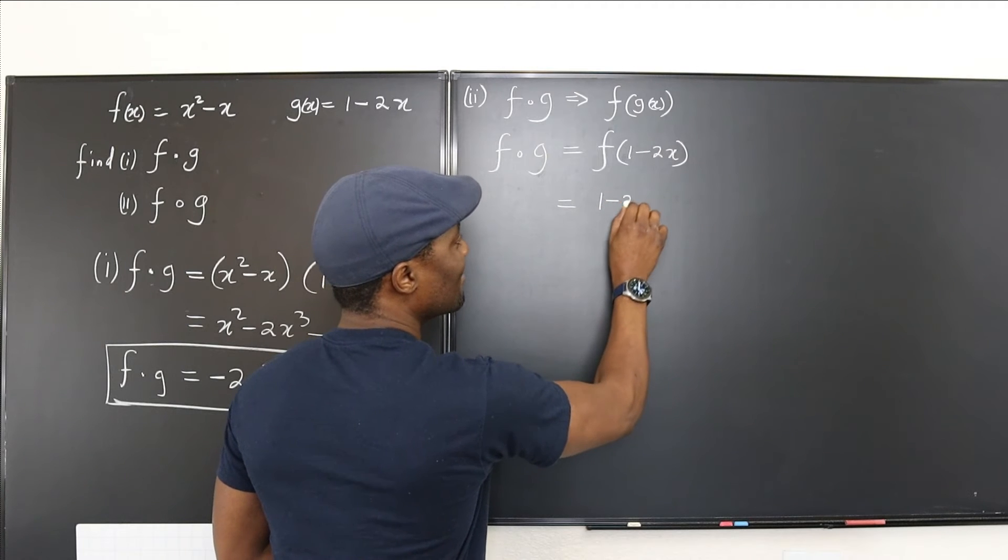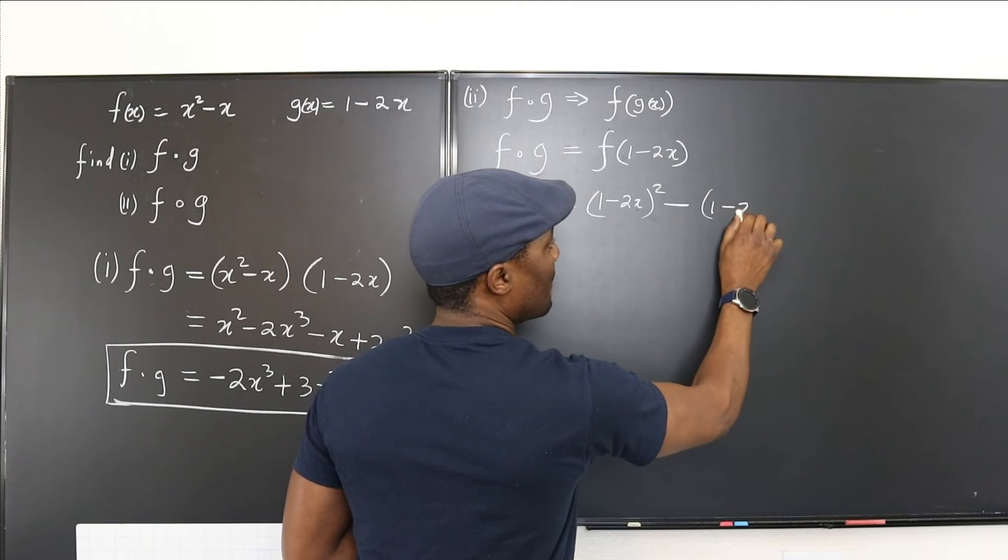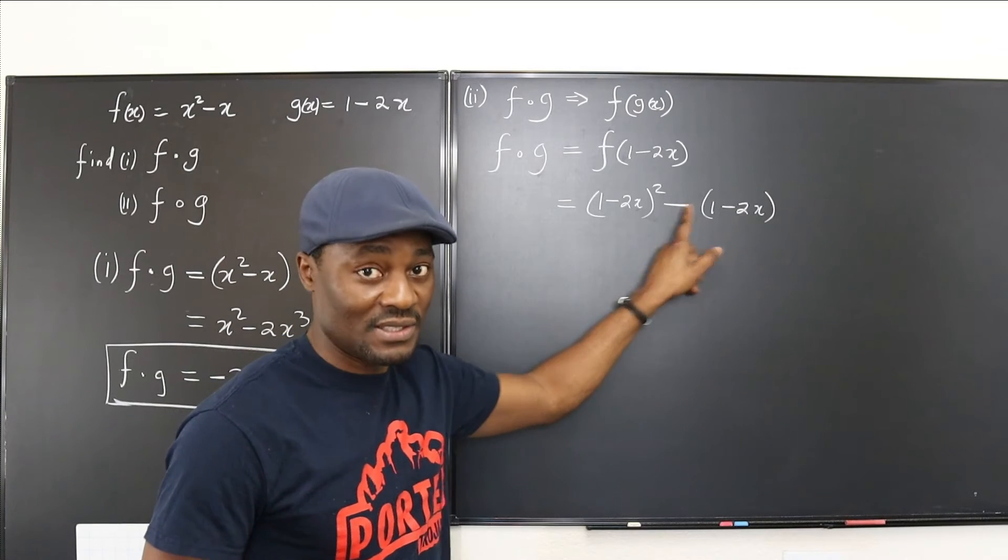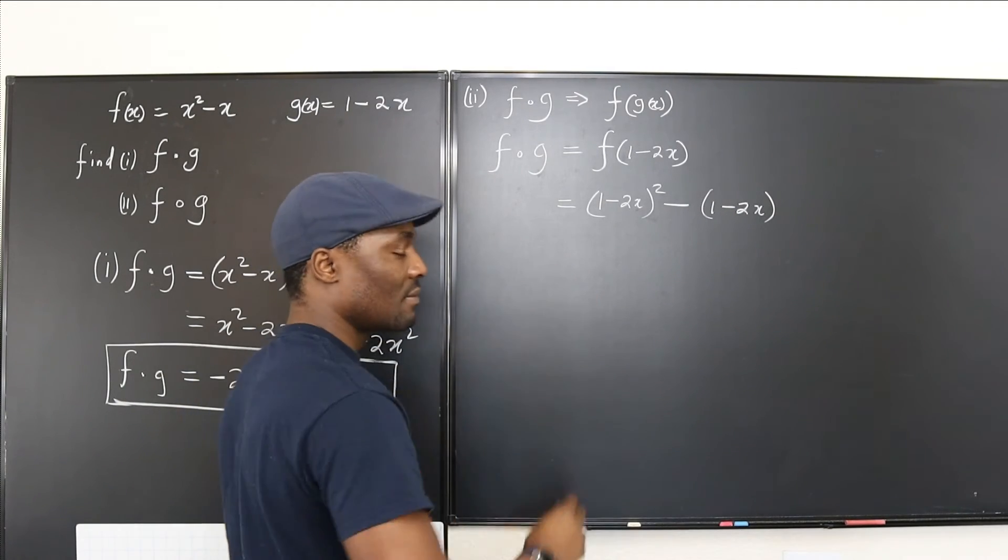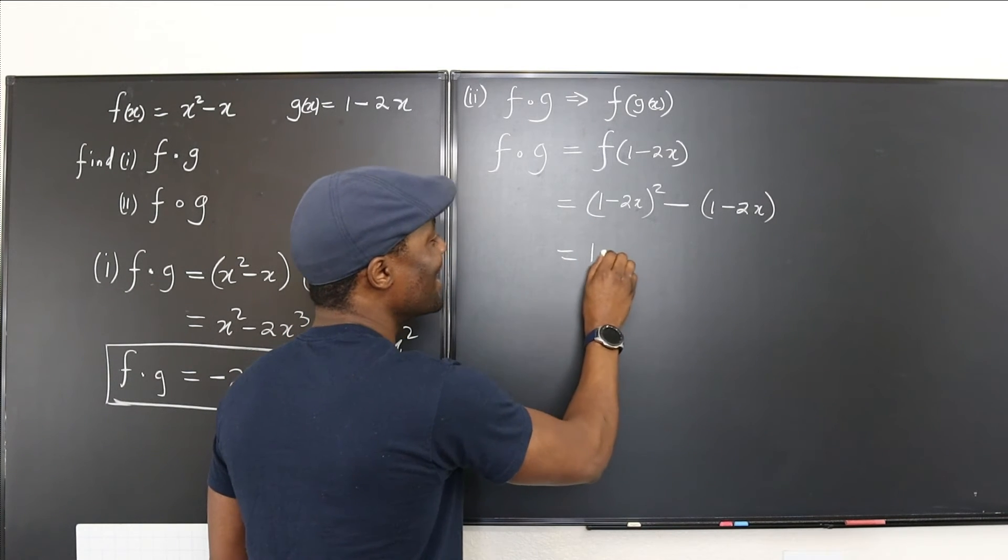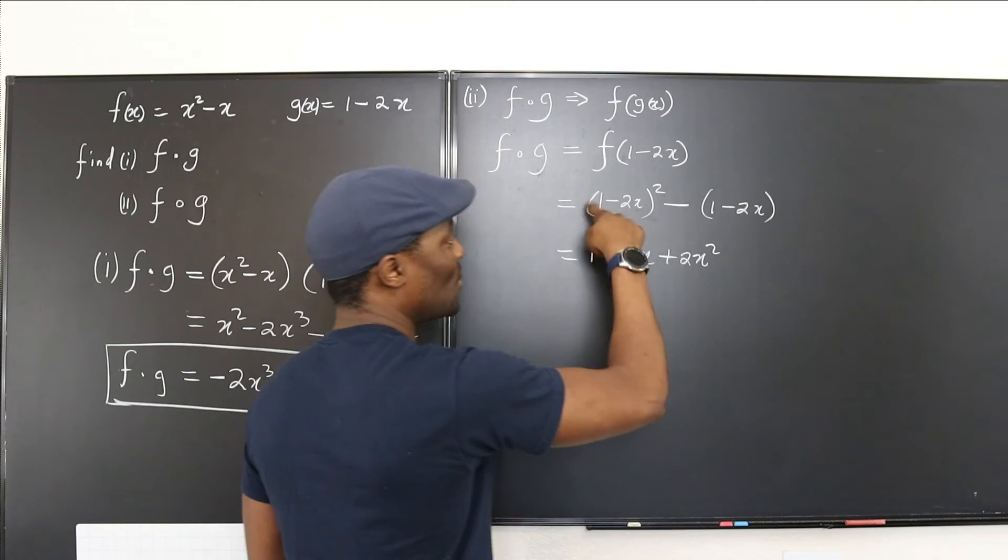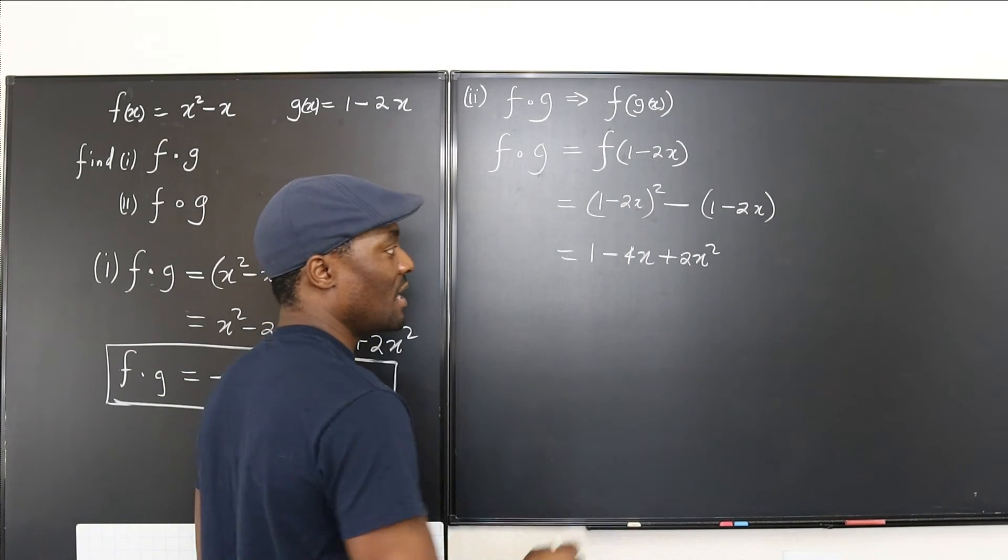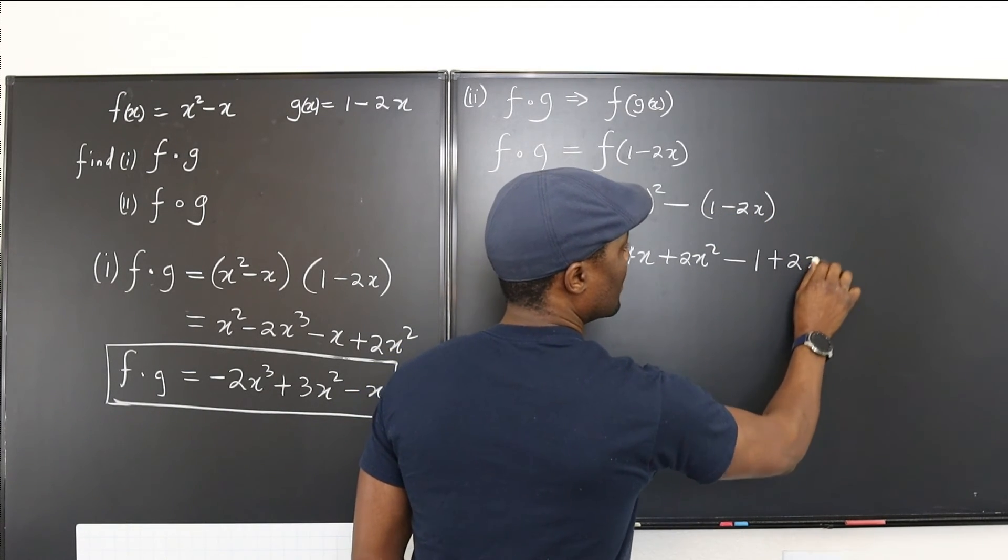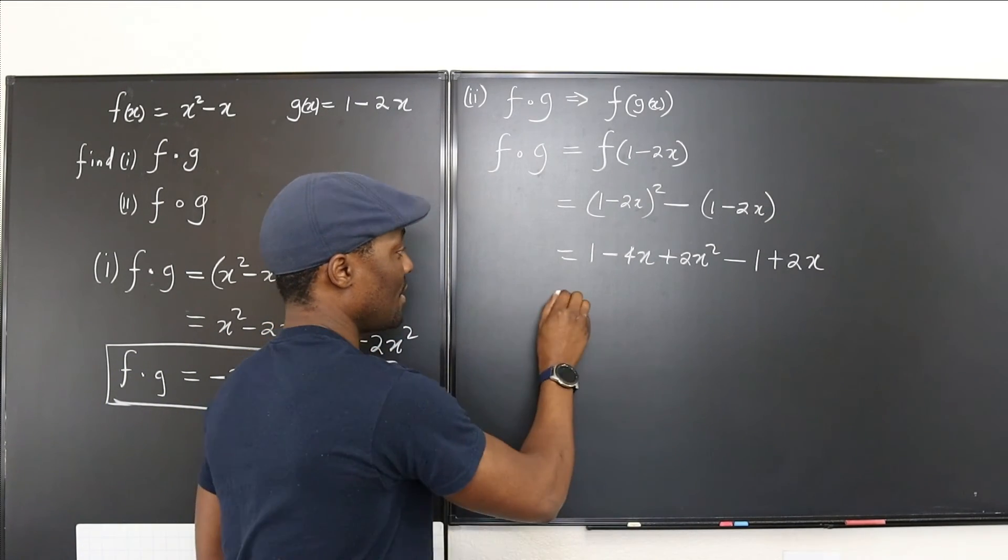Make sure you put it in parenthesis because you want to make sure that this negative is distributed. Distributed. Now, here we go. We have 1 minus 4x plus 2x squared. That's what you get when you distribute this, and you have minus 1, and this becomes plus 2x. So, here we go.